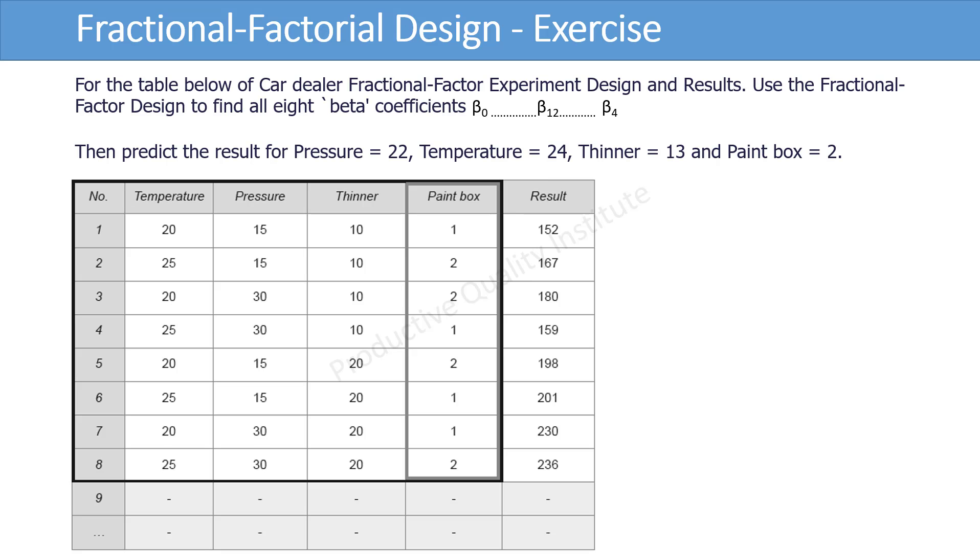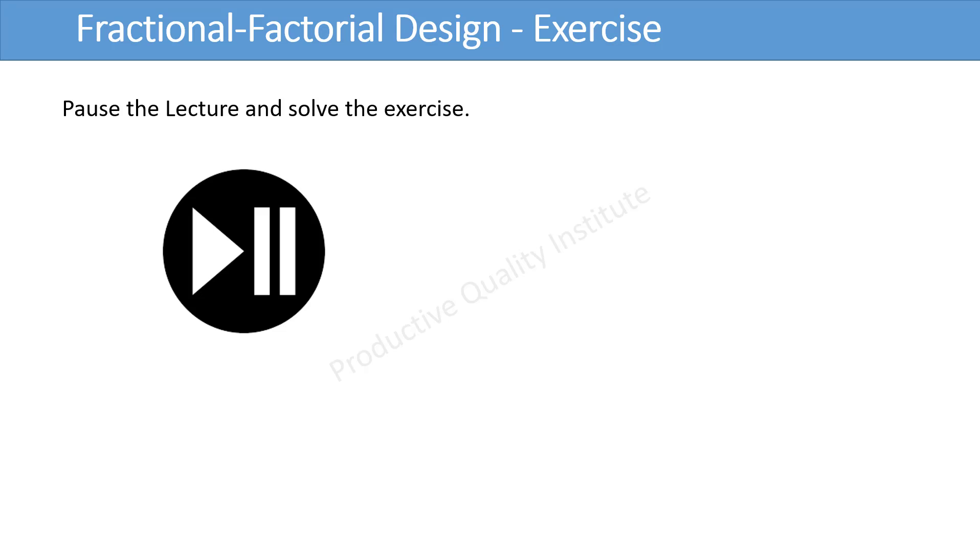For the table below of car dealer fractional factor experiment design and results, use the fractional factor design to find all 8 beta coefficients from beta 0, beta 1 and so on until beta 4. Then predict the result for pressure equal to 22, temperature equal to 24, thinner equal to 13, and paint box equal to 2. Please pause the lecture and solve the exercise.